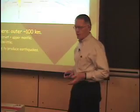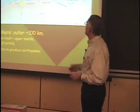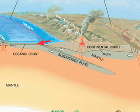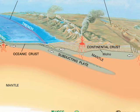The lithosphere — it turns out that cold, brittle plate that moves in unison — has two parts to it. The upper part of the lithosphere is the crust. So if we have an oceanic lithospheric plate, which is about 100 to 150 kilometers thick, its very upper part — about 6 to 8 kilometers of it — is oceanic crust.